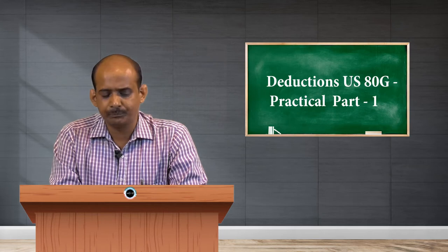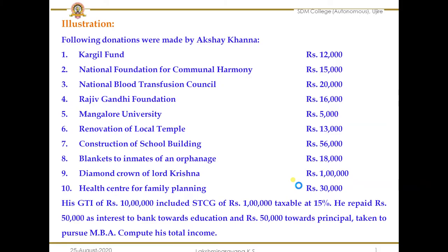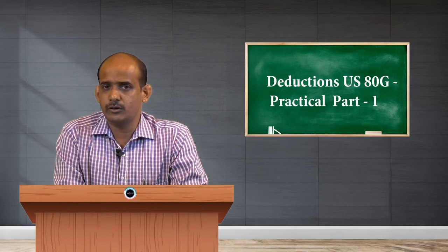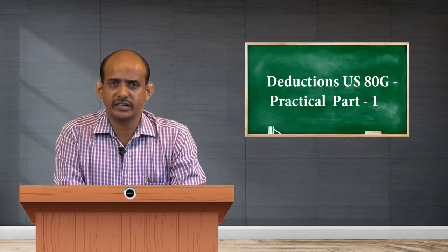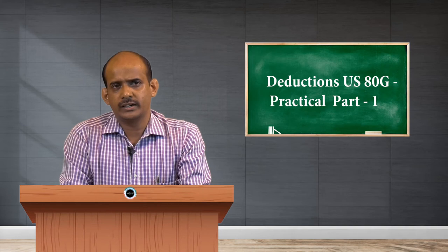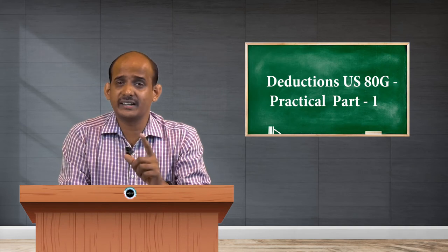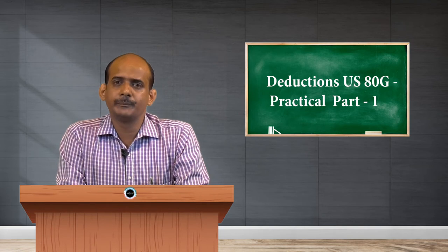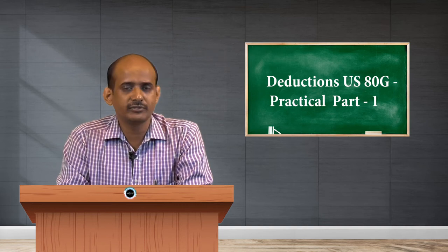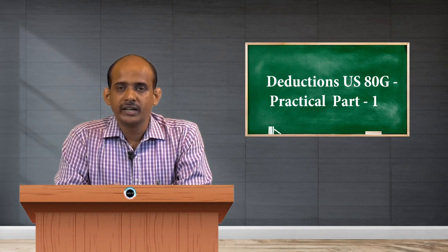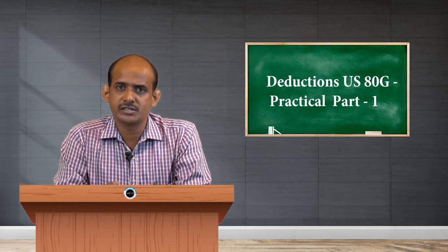The next donation is renovation of a local temple. Any donation given to a temple, mosque, gurudwara, or church is eligible, but the benefit should not be restricted to any particular caste, creed, or community, and the religious place should be a recognized one. A local temple cannot be considered for claiming deductions under either category. So renovation of a local temple will not come under the deduction, and this item will be ignored.